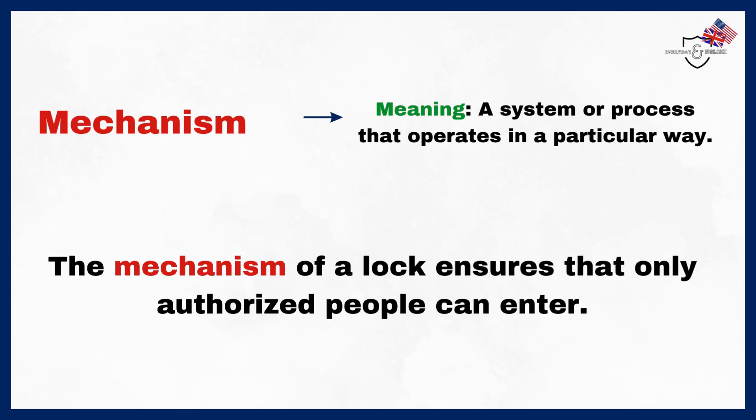Mechanism. Meaning: A system or process that operates in a particular way. Example: The mechanism of a lock ensures that only authorized people can enter.